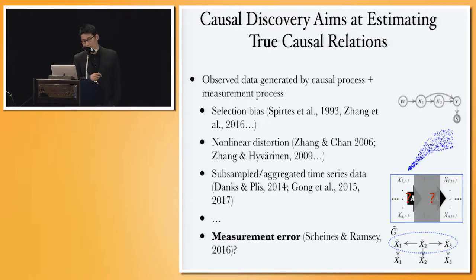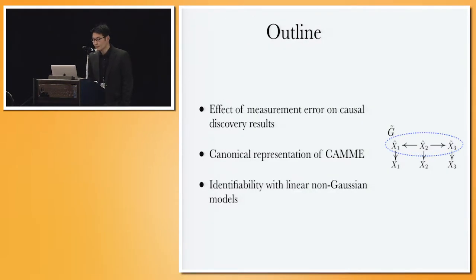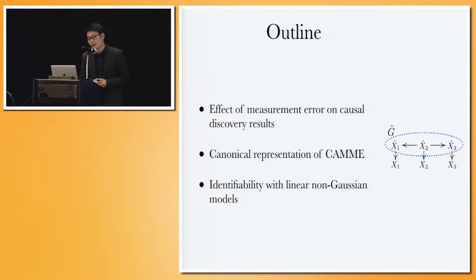This issue was first discussed by Richard Scheines and Joe Ramsey two years ago. However, at that moment, no theory regarding the identifiability conditions was provided. In this talk, I will first present the effect of measurement error on causal discovery results, then give a canonical representation of the causal model with measurement error to facilitate our theoretical analysis, and finally present some identifiability results for the underlying causal structure using linear non-Gaussian models.